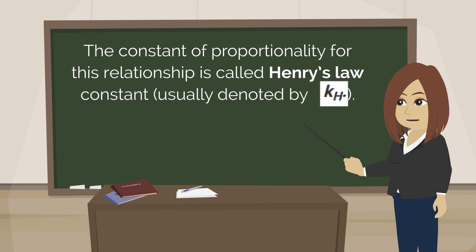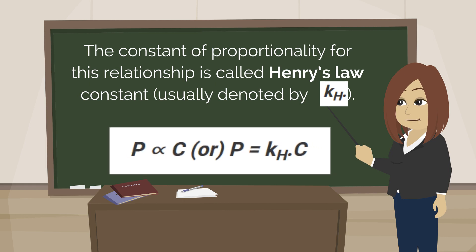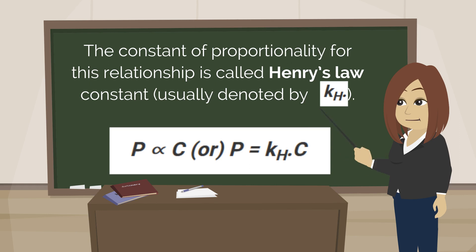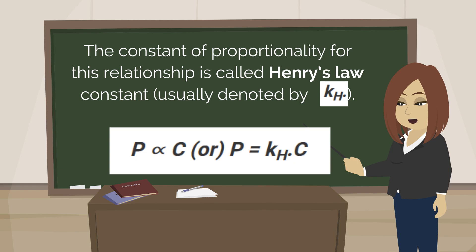The mathematical formula of Henry's law is given by: P denotes the partial pressure of the gas in the atmosphere above the liquid. C denotes the concentration of the dissolved gas. KH is the Henry's law constant of the gas.